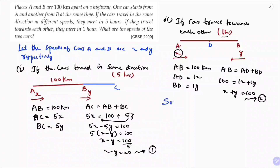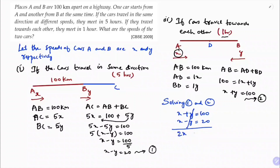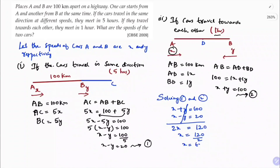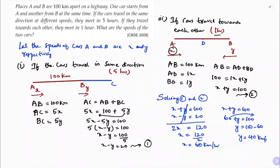Now solving equation 1 and equation 2 by elimination. Equation 1: x − y = 20. Equation 2: x + y = 100. Adding both equations: 2x = 120, so x = 60 km/h. Substituting back: 60 + y = 100, so y = 40 km/h.